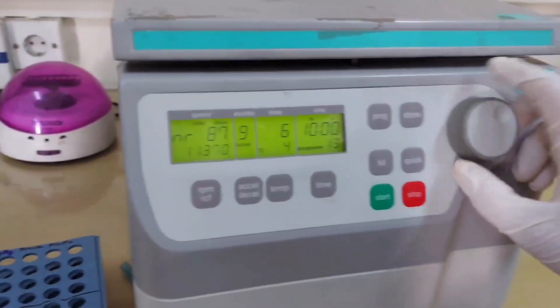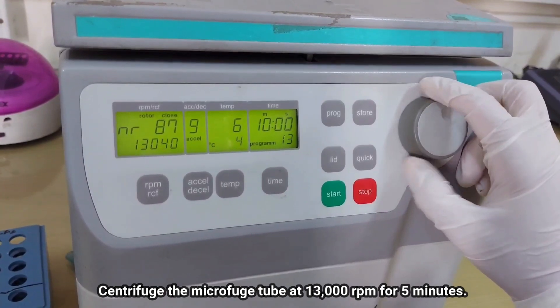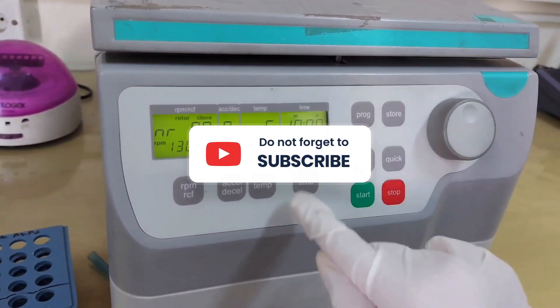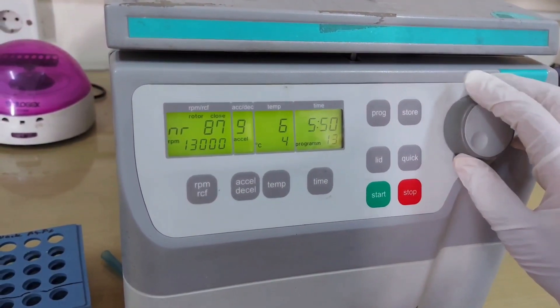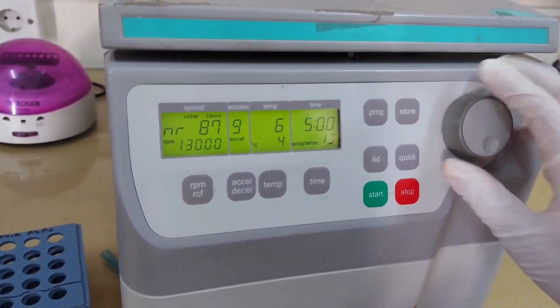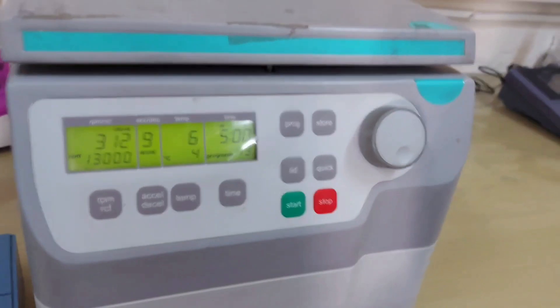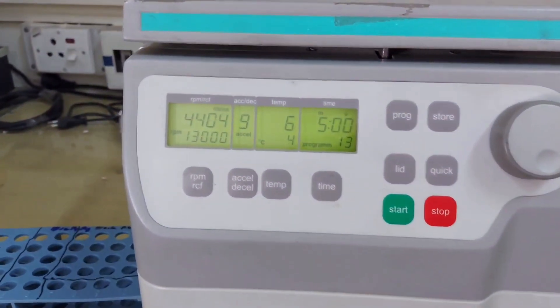Close the lid. You don't need to push it too hard. And then set your program to the specific need of the sample. Here I am setting the centrifugation machine to 13,000 rpm. When you want to set your centrifugation machine, make sure to press the store button for a while. Now I am storing the time to 5 minutes. And then store your settings and start. The centrifugation machine will start its time as it reach 13,000 rpm.